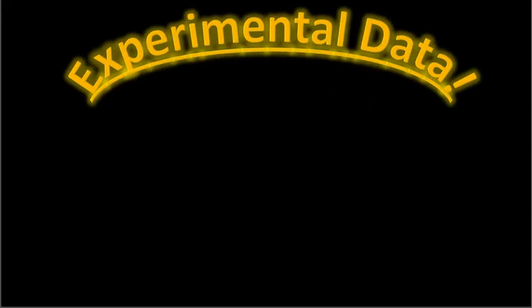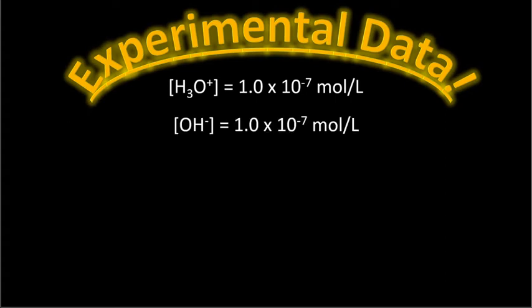We get experimental data, because that's how you have to figure this stuff out. So thinking back about the reaction we just talked about, what they discovered by experimental data is that in absolutely pure water, the concentration, that's what the brackets around it mean, the concentration of hydronium is 1.0 times 10 to the negative 7 moles. So not a lot. They also discovered that the concentration of hydroxide is the same, which makes sense, because if water falls apart, one part is hydroxide and the other part is hydronium.